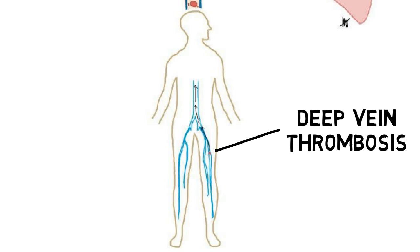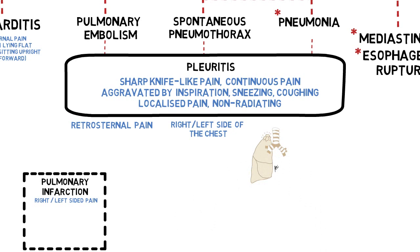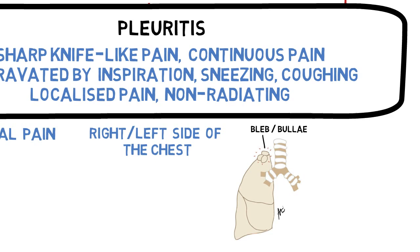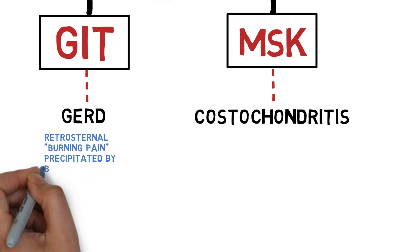Spontaneous pneumothorax causes pleuritic pain at either the right or left side of the chest, because it is at the apical and peripheral regions where pleural blebs or pleural bullae are commonly located. In gastroesophageal reflux disease, the pain is also retrosternal but burning in nature, because it is caused by gastric acid irritating the esophageal wall.